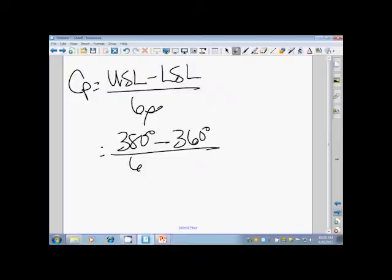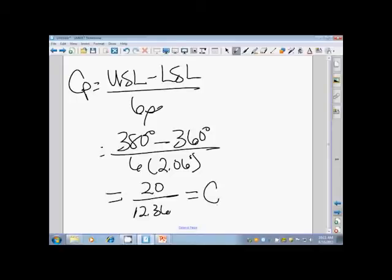What was the standard deviation? Going back to the problem, it said that it was 2.06 degrees Fahrenheit. So if I do the math on this, I am going to take 380 minus 360, which is 20 divided by 6 times 2.06 and I get 12.36 for that. If I take 20 and divide it by 12.36, my capability index becomes 1.618122.